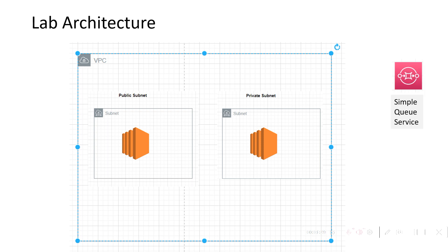After that, we are going to deploy one AWS service called Simple Queue Service, that means SQS. Once it is deployed, we will assign one IAM role to the private EC2 machine so that we can access the SQS service from our private EC2 machine.